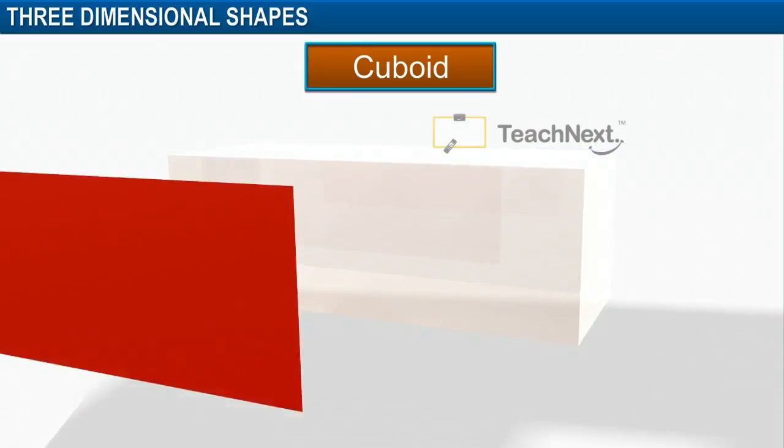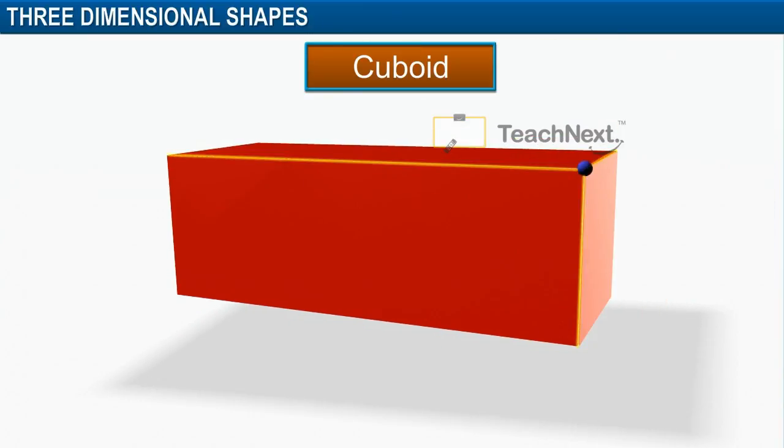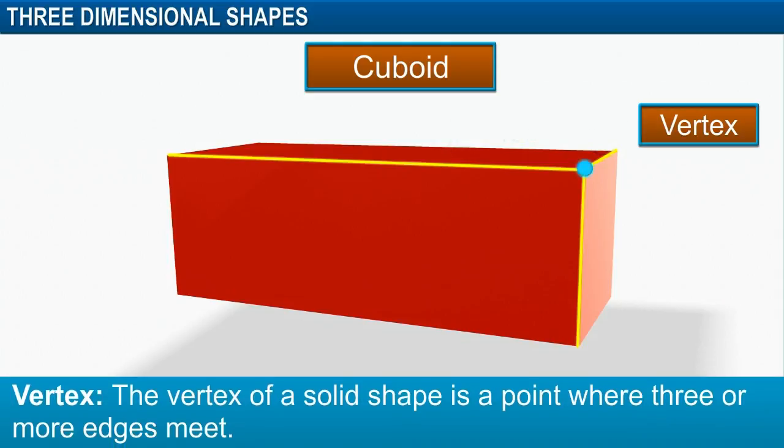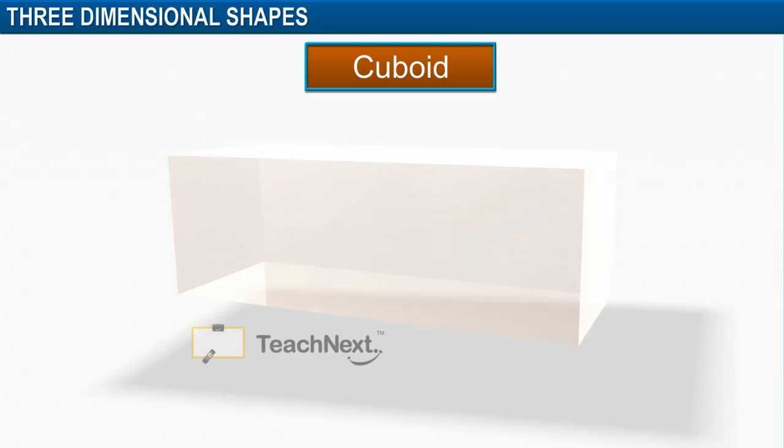Three edges of the cuboid join at a point. This point is called a vertex. A vertex of a solid shape can be defined as a point where three or more edges meet. A cuboid has eight vertices.